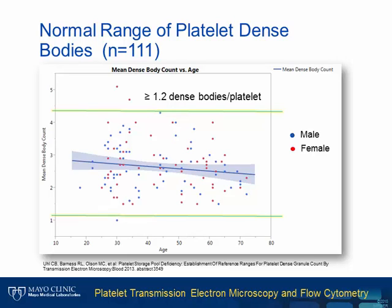This normal range is critical to identify mild to moderate dense granule deficiencies. Stability studies showed that whole blood collected in ACD tubes and stored at room temperature gave stable dense granule counts for up to four days. Therefore, TEM study can be performed on properly transported samples.